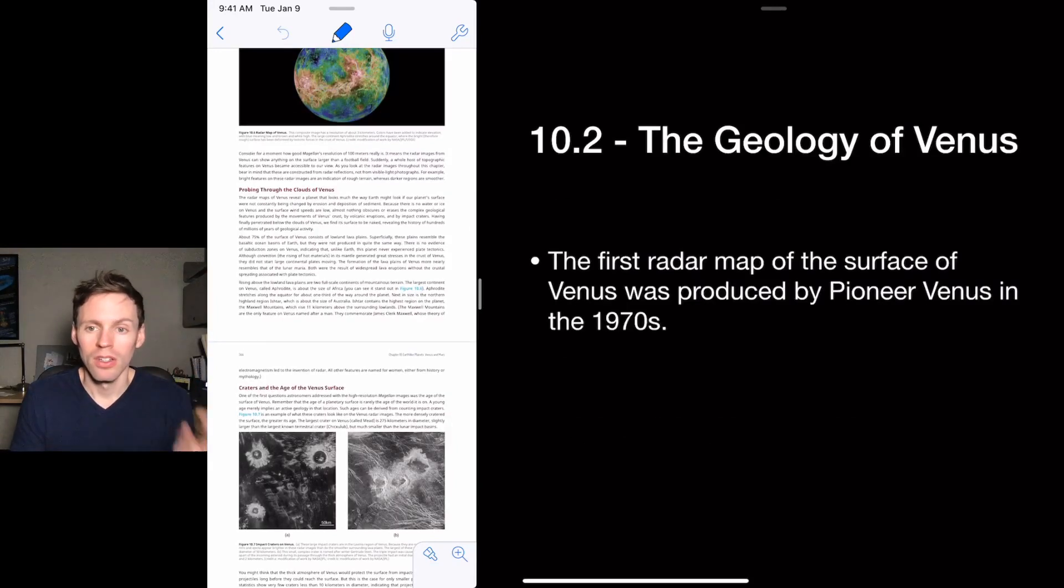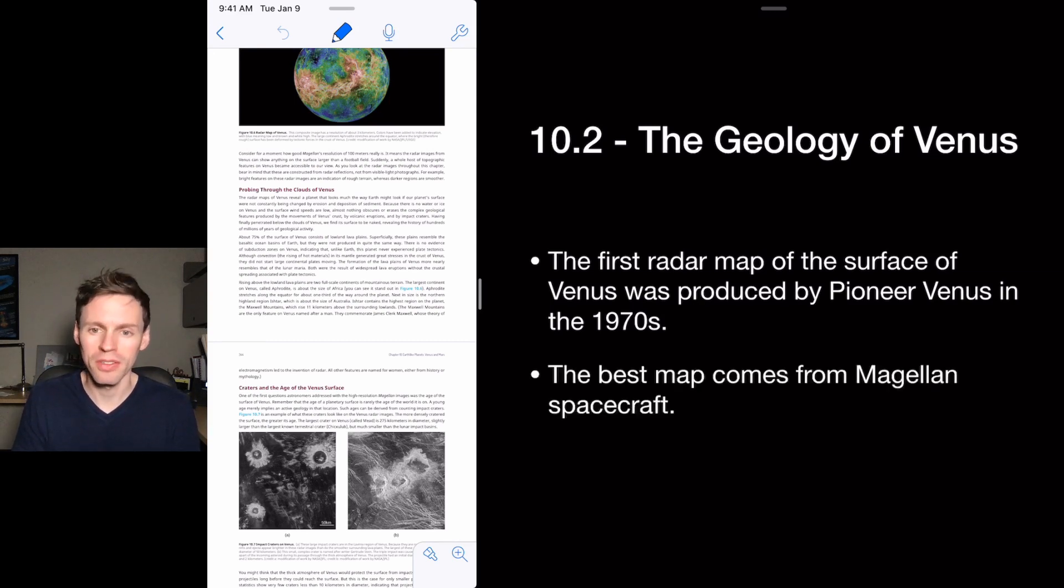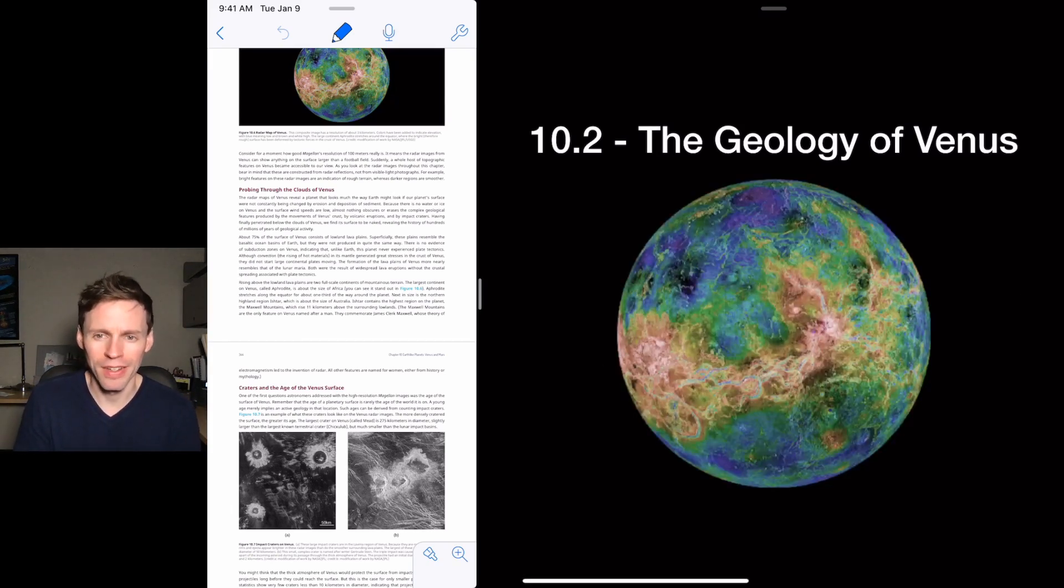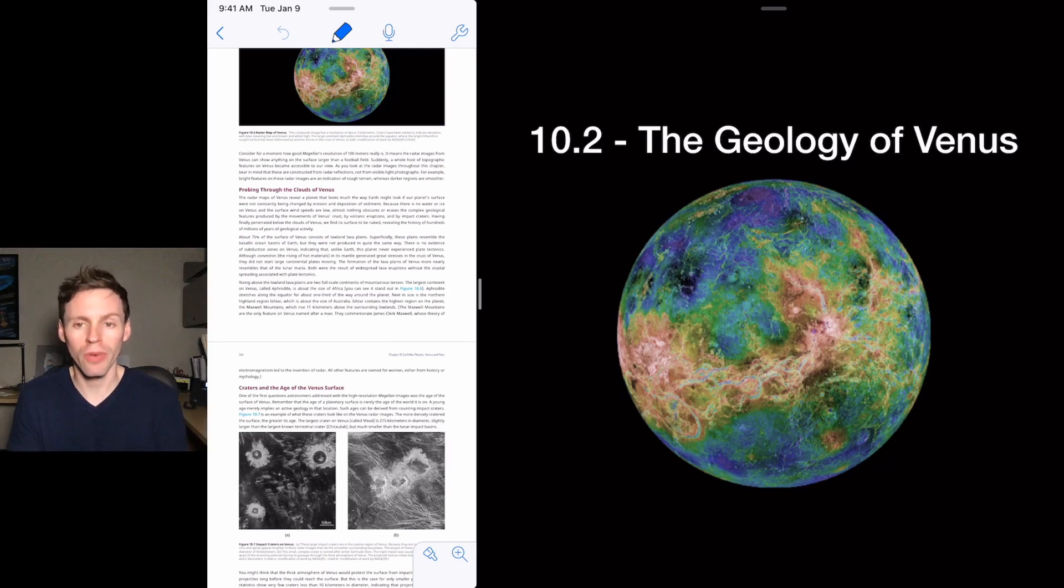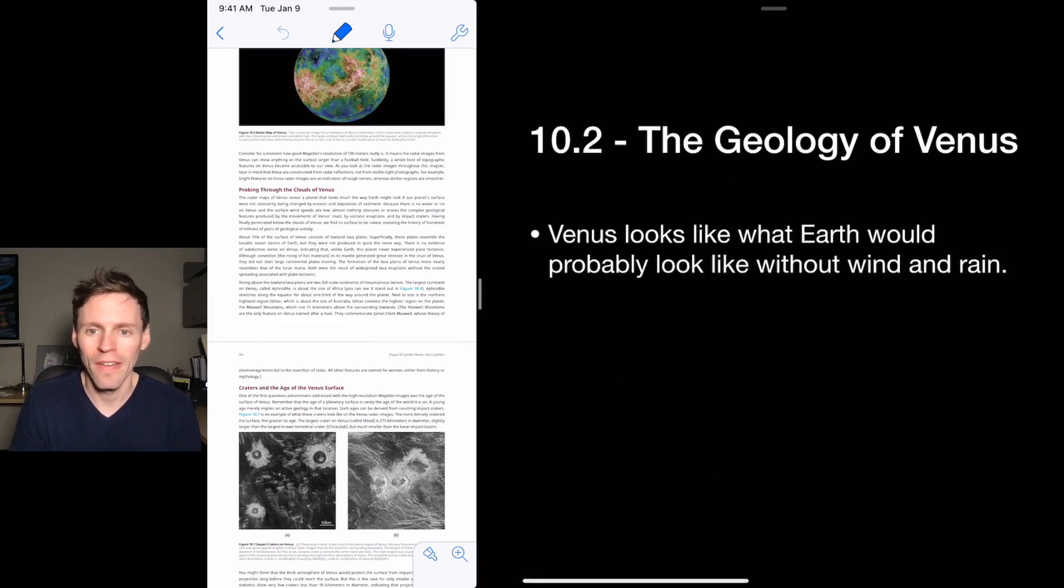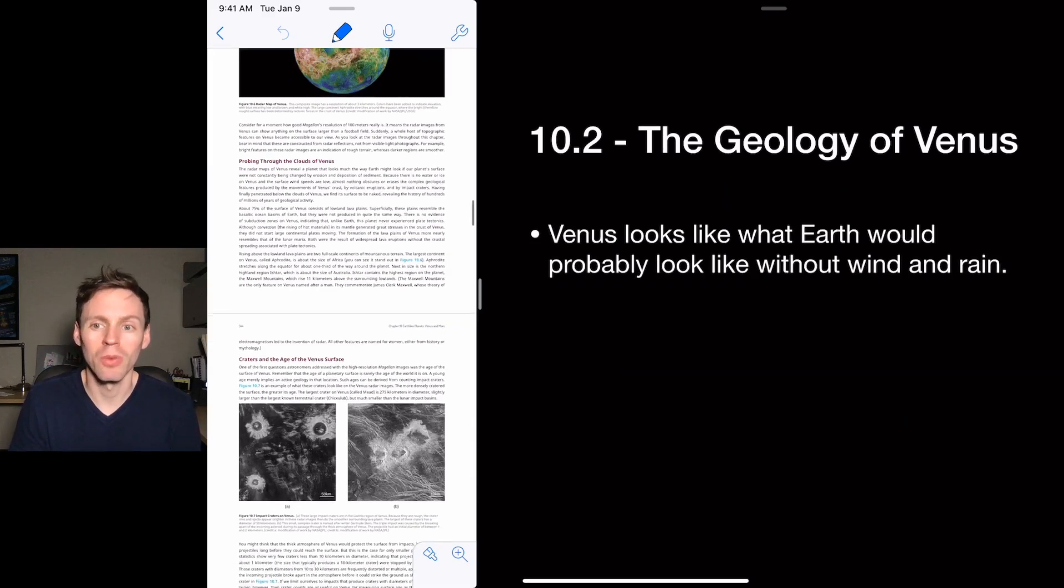But the Pioneer Venus mission took a radar with it, orbited Venus instead of landed on Venus, and then took a radar image of it. But the best map comes from the Magellan spacecraft, and there's this nice beautiful image of the surface of Venus without the clouds. So we can see through the clouds with radar, and this is what we see.